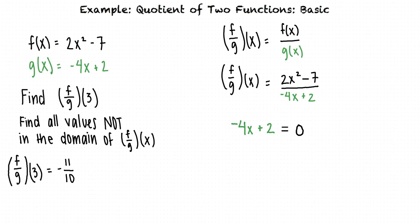If negative 4x plus 2 cannot equal 0, we can solve this to find that x cannot equal 1 half. Therefore, 1 half is the only value that is not in the domain of f divided by g of x.